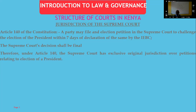So under Article 140, the Supreme Court has exclusive original jurisdiction over petitions relating to the election of a president. Having exclusive original jurisdiction means it is the only court where you can go as a court of first instance — it has original jurisdiction, not appellate jurisdiction. Original jurisdiction is where you're bringing the first petition to that court; it does not sit on appeal on matters of a petition relating to the election of the president.